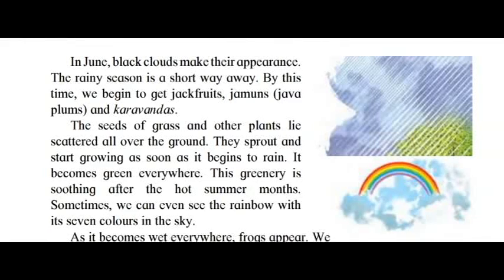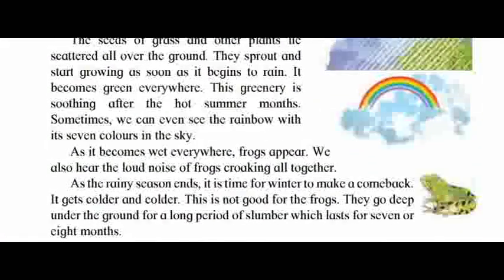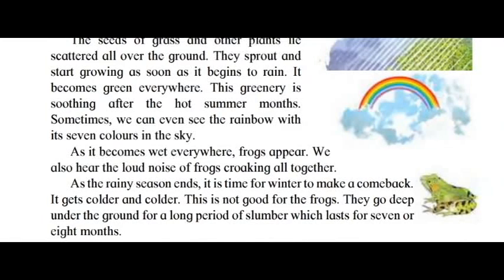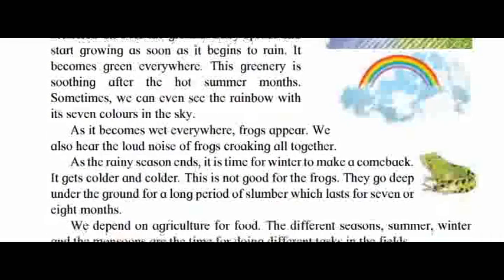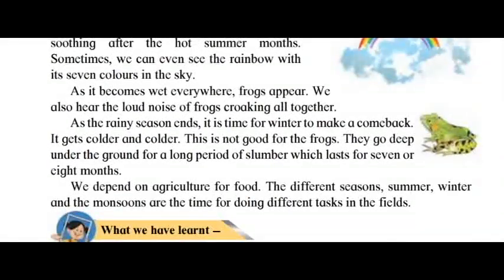The seeds of grass and other plants lie scattered all over the ground. They sprout and start growing as soon as it begins to rain. It becomes green everywhere — this greenery is soothing after the hot summer months. Sometimes we can even see a rainbow with its seven colours in the sky. As it becomes wet everywhere, frogs appear, and we hear the loud noise of frogs croaking altogether.